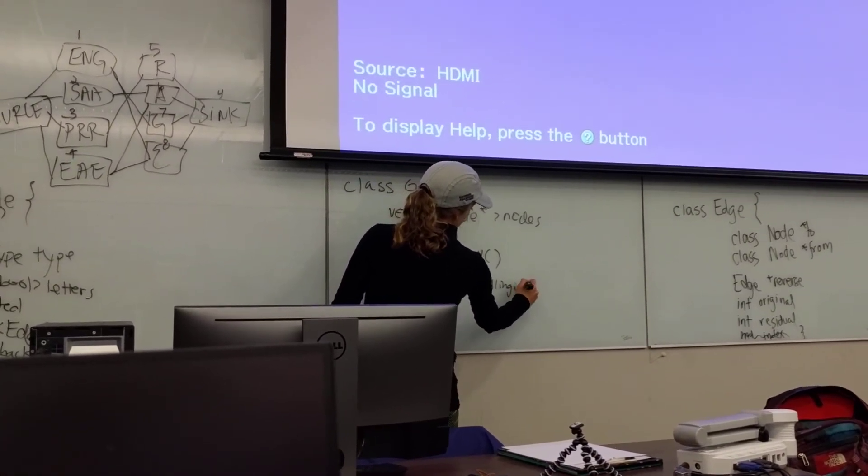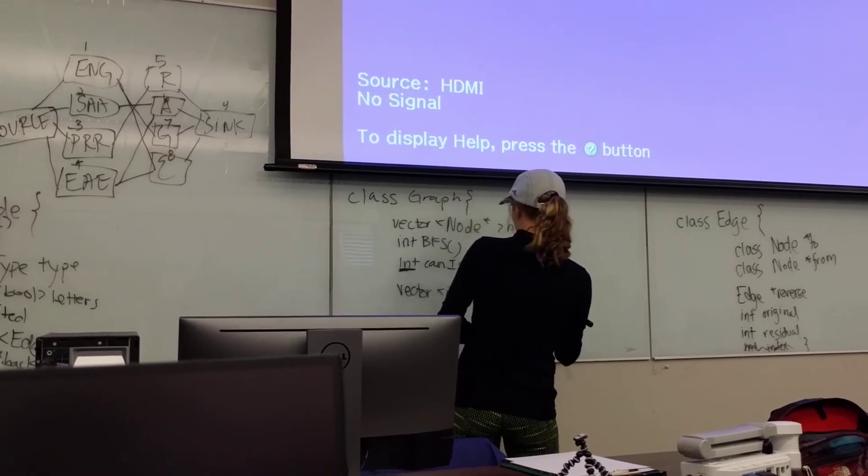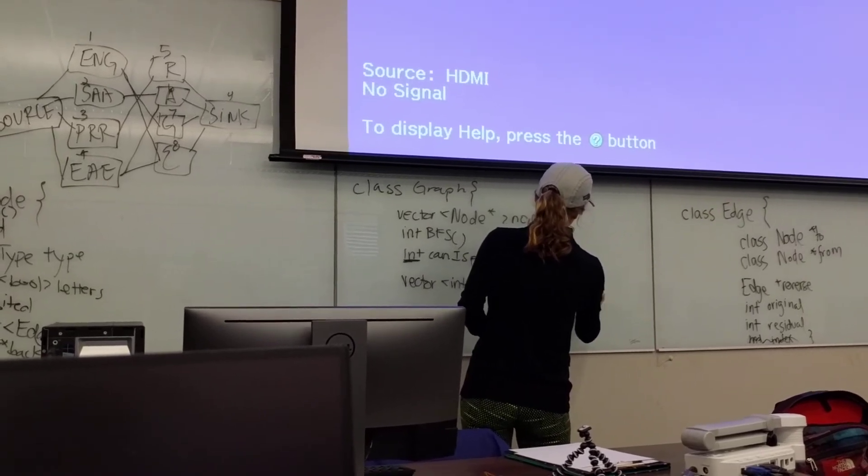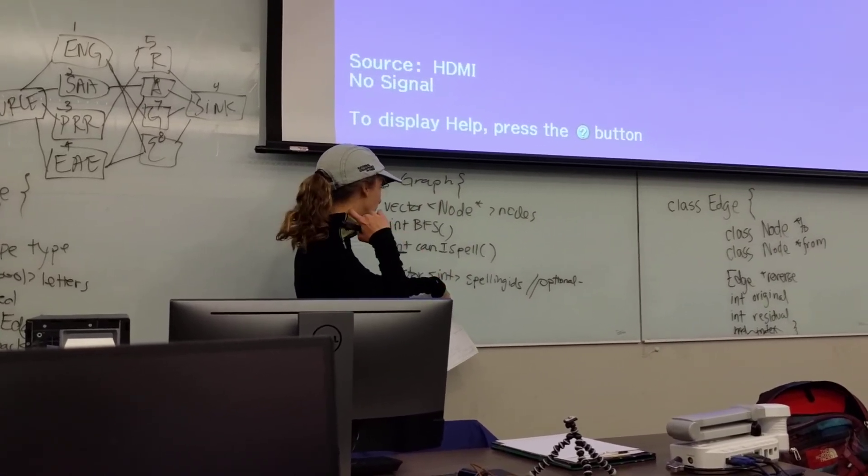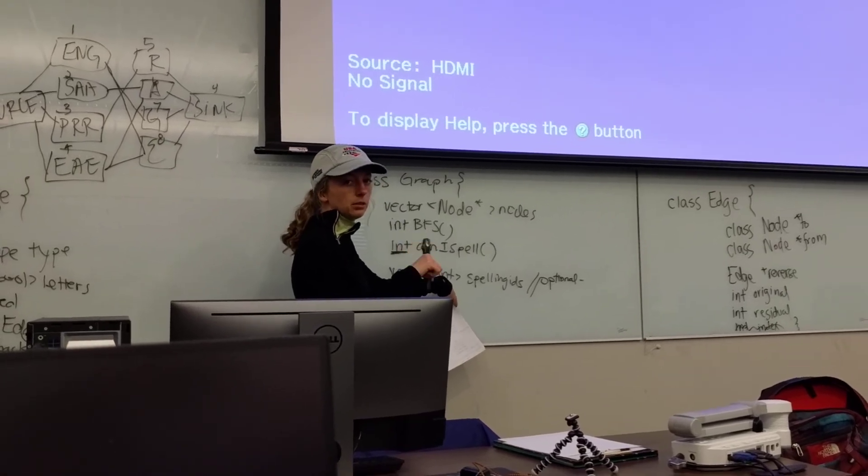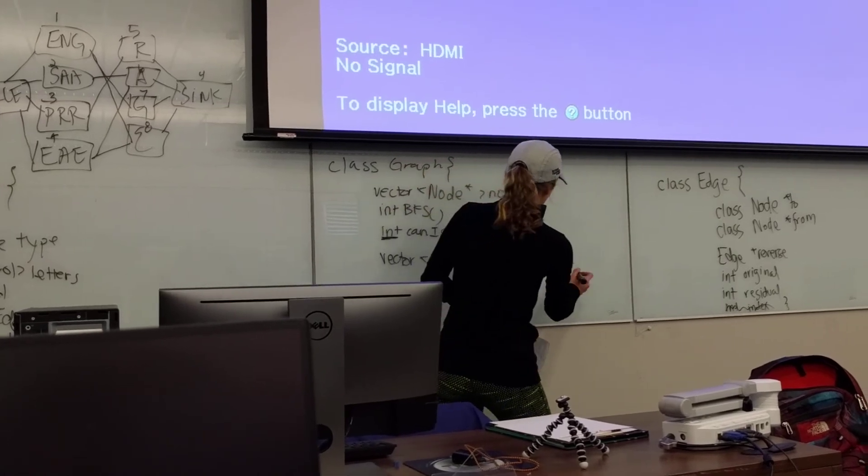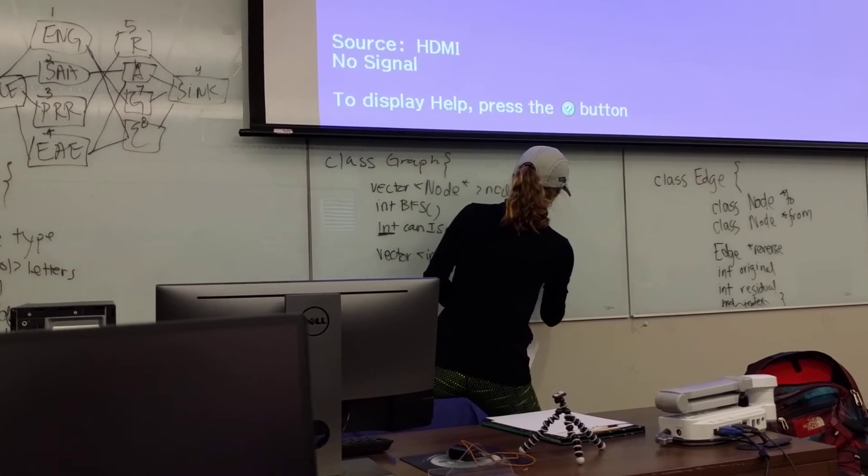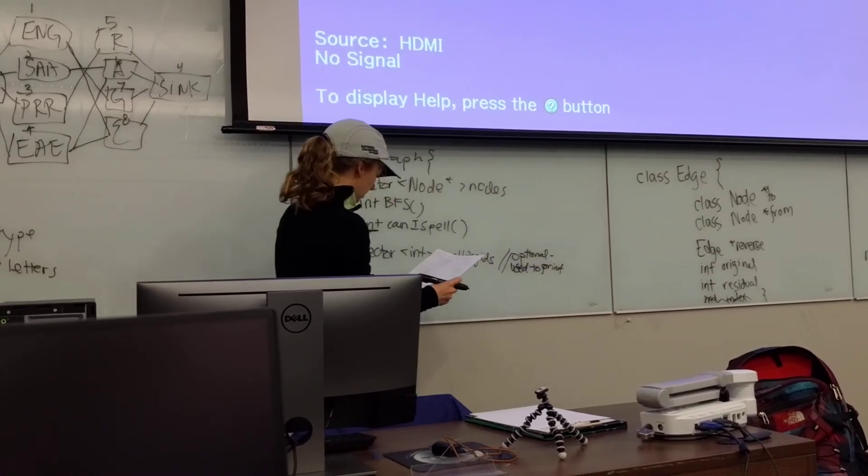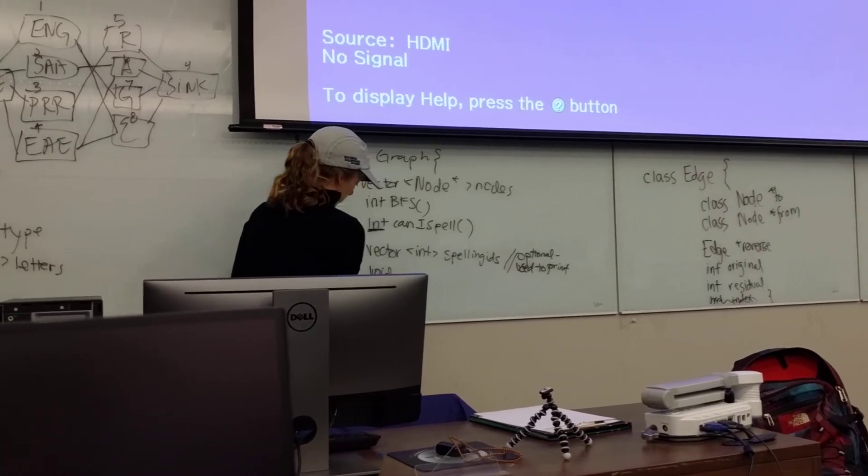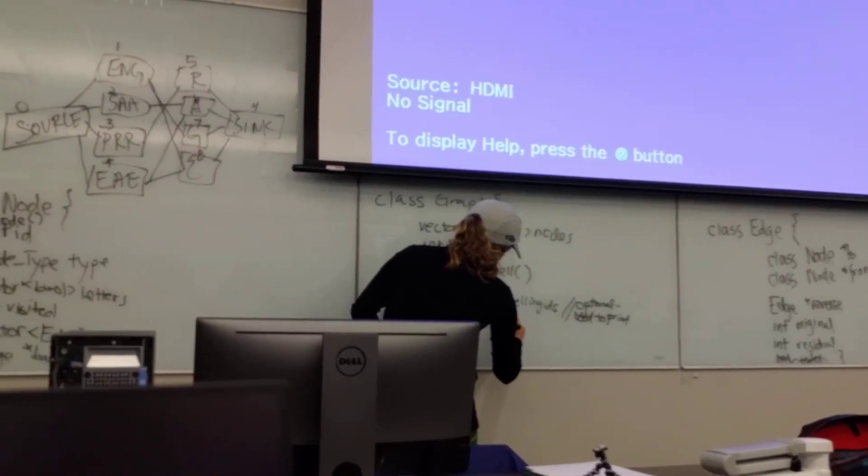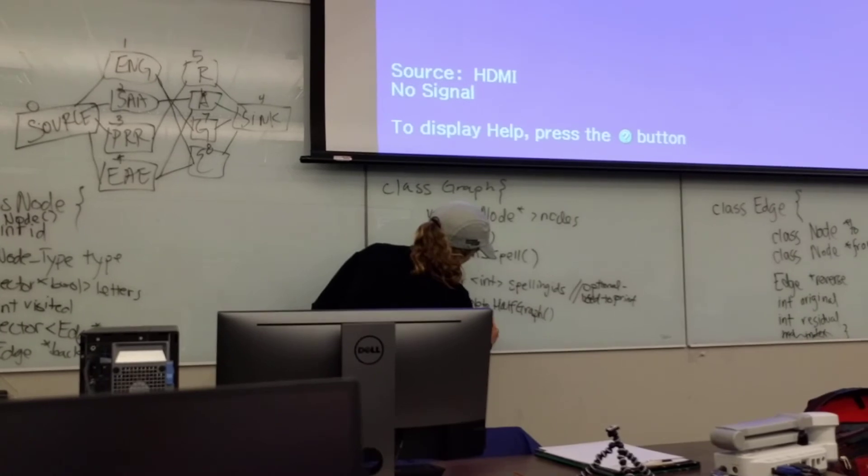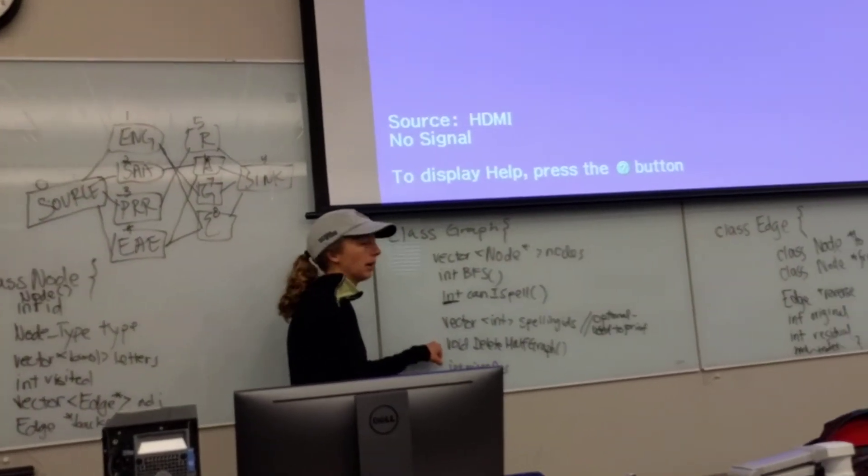And a vector. I'll call this spelling IDs. This is, out of anything, this is the most optional. It's just how I use to print the dice notes. So once I figured out if I could spell the word, I use spelling IDs to throw in the dice notes that I use to spell that word, so I can print it out easy. And then, Dr. Plank mentions this in the write-up briefly. This is called delete half graph.